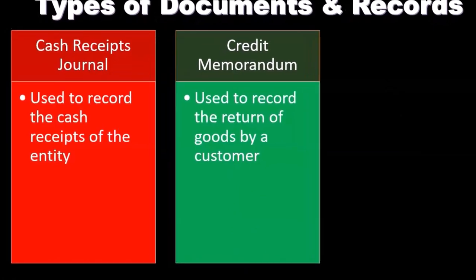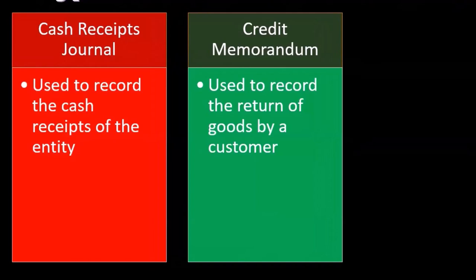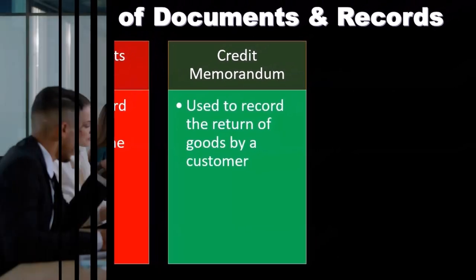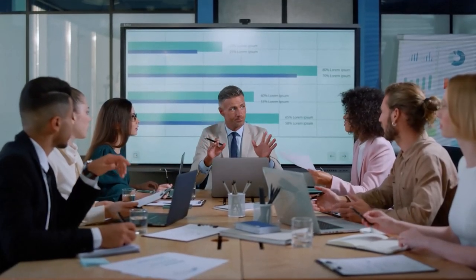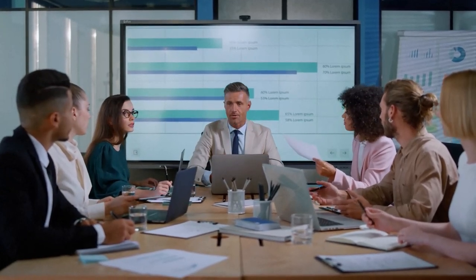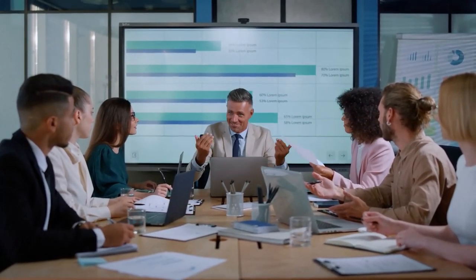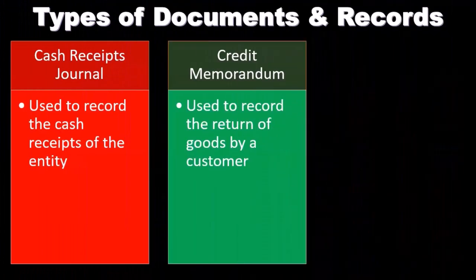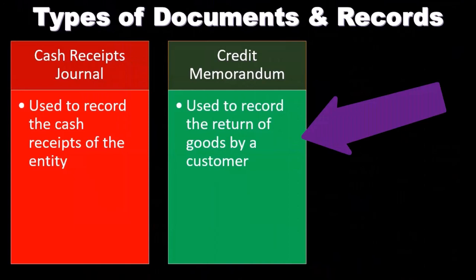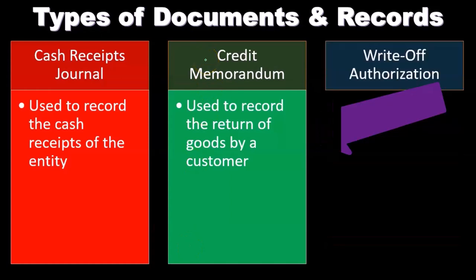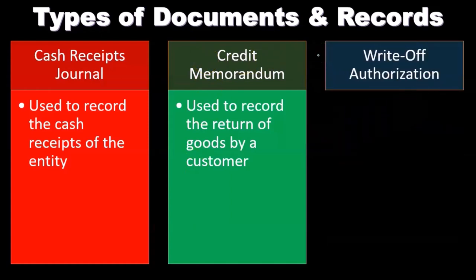The credit memorandum is used to record the return of goods by customers, and it's important for recording revenue. Many times even bookkeepers in the accounting department don't know the journal entry behind a credit memorandum because it's backwards - it reverses the sales. The credit memorandum is essentially a reversal; there's some type of return, so the sales transaction is reversed and adjusted using sales returns and allowances instead of sales. The credit memorandum can be a little confusing to analyze because returns are somewhat counterintuitive in our thinking about accounting.